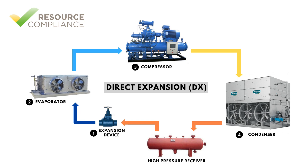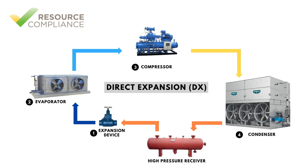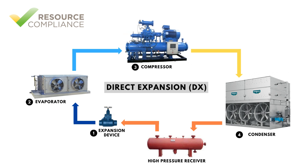As the refrigerant absorbs heat in the evaporator, it boils as it transitions from liquid to vapor. The vapor exiting the evaporator is piped to a compressor, which receives the low-pressure, low-temperature vapor and compresses it.